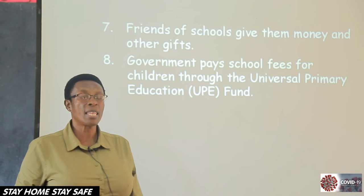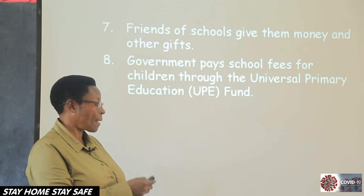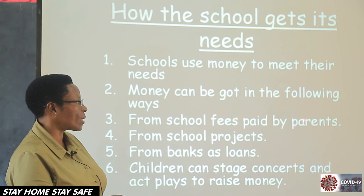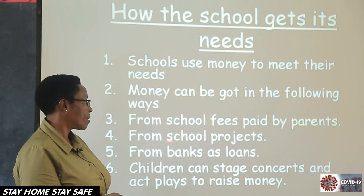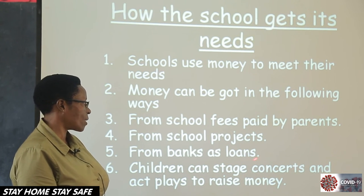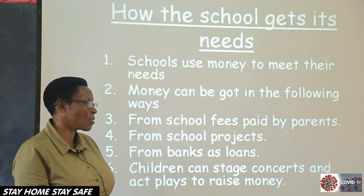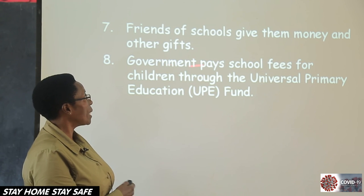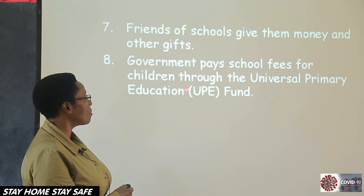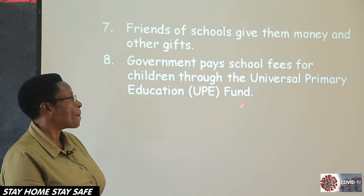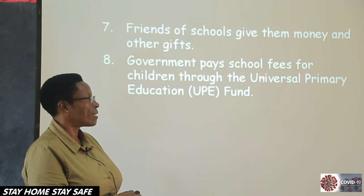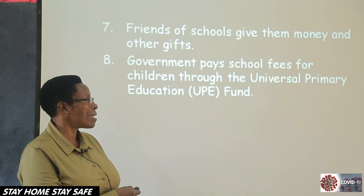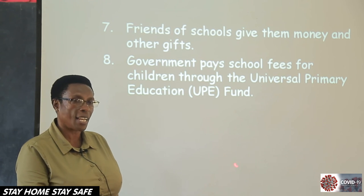So those are the ways a school can get money. Let's read them: how the school gets money — from school fees paid by parents, from school projects, from banks as loans, children can stage concerts and act plays to raise money, friends of the school give money, and through the Universal Primary Education Fund. Look at that word — Universal. Can we spell it? U-N-I-V-E-R-S-A-L. Universal.